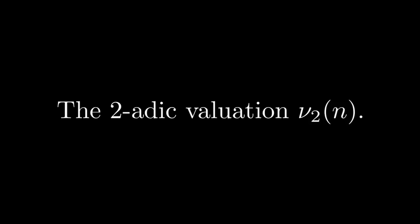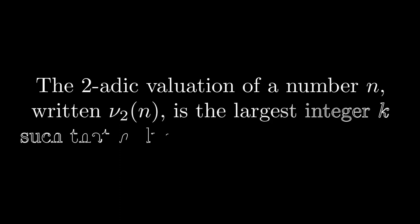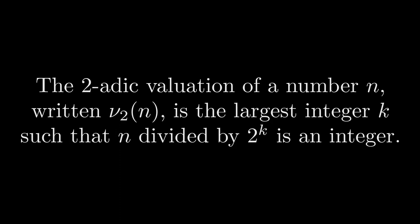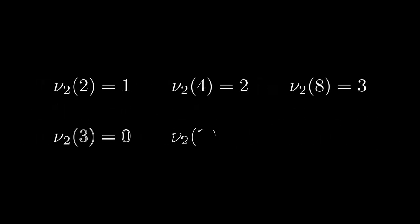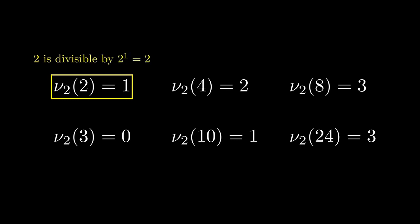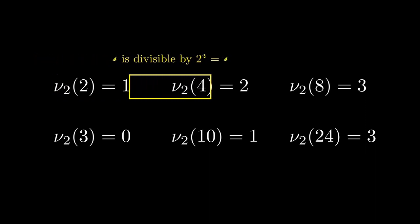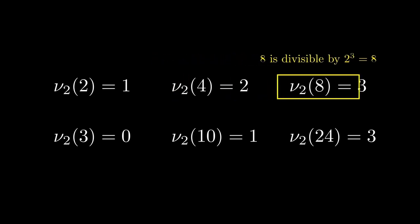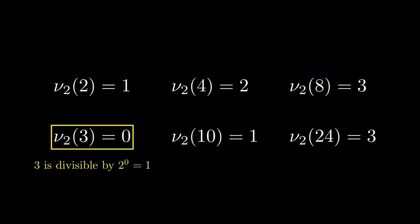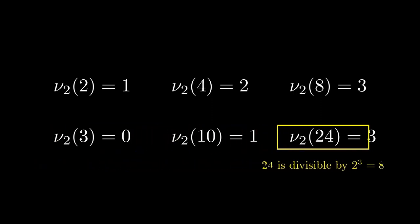Intuitively, the 2-adic valuation measures how divisible by 2 any given number is. Formally, the definition of the 2-adic valuation of n is the largest integer k, such that 2 raised to the kth power divides n. Let's look at some examples. Firstly, the 2-adic valuation of 2 is 1, since 2 to the first power divides 2, but 2 squared does not. On the other hand, the 2-adic valuation of 4 is 2, since 2 squared divides 4, but 2 cubed does not. Similar reasoning holds for the other integers displayed. Notice that the 2-adic valuation of a number is 0 if and only if that number is an odd integer. Make sure you understand why this holds before moving on.